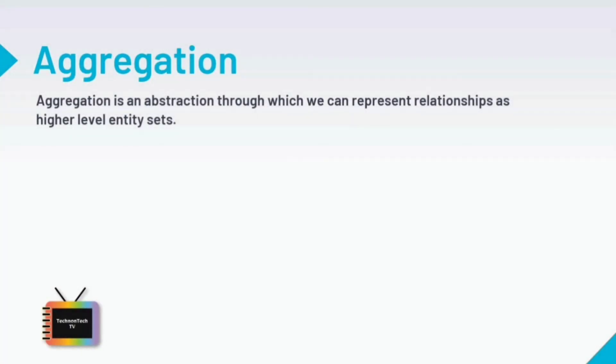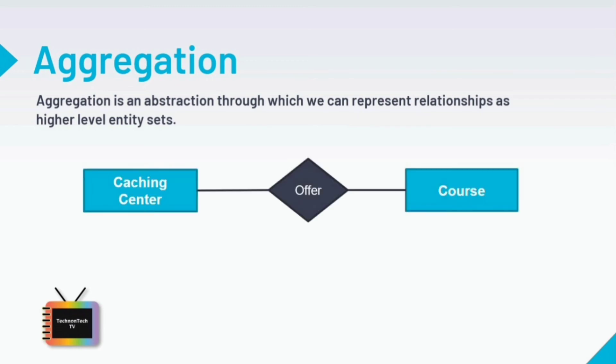Next is Aggregation. ER diagrams are not capable of representing relationships between an entity and a relationship, which may be required in some scenarios. In those cases, a relationship with its corresponding entities is aggregated into a higher-level entity. Basically, aggregation is a process when the relation between two entities is treated as a single entity. In this diagram, the relation between Coaching Center and Course together is acting as an entity which is in a relationship with another entity, Visitor.